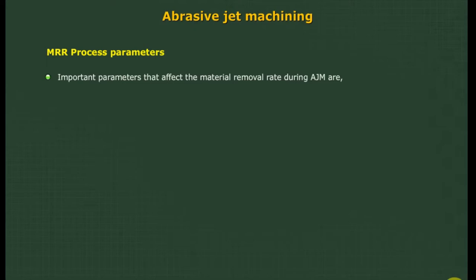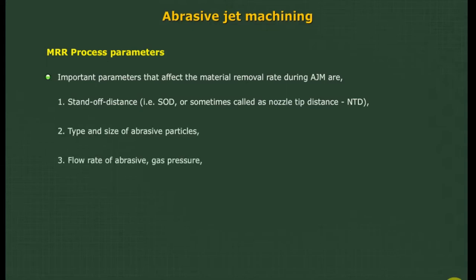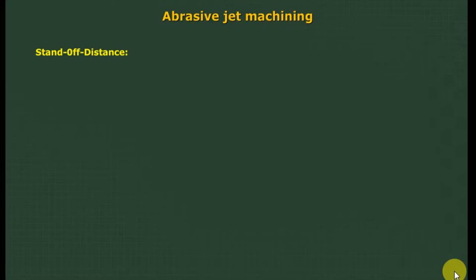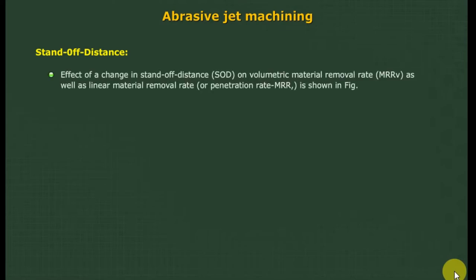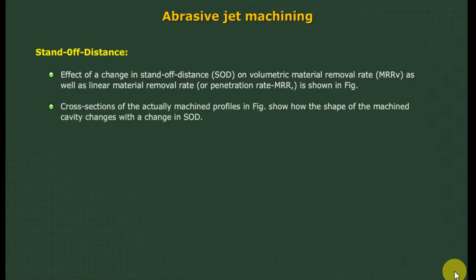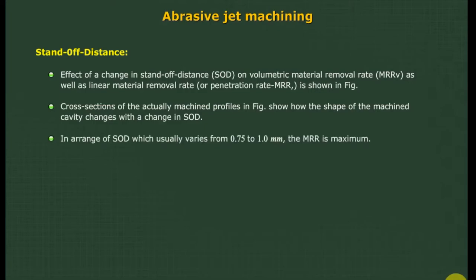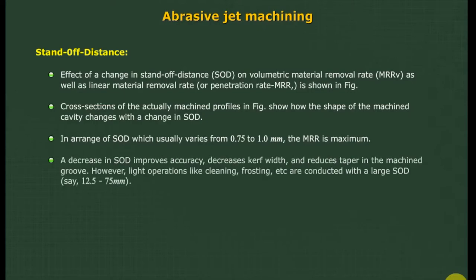Important parameters affecting material removal rate during AJM are: (1) stand-off distance, (2) type and size of abrasive particles, (3) flow rate of abrasive and gas pressure, and (4) work material and feed rate. Regarding stand-off distance (SOD): the MRR is maximum in a range of SOD usually varying from 0.75 to 1.0 mm. A decrease in SOD improves accuracy, decreases kerf width, and reduces taper in the machined groove. However, light operations like cleaning and frosting are conducted with a large SOD, say 12.5 to 75 mm.